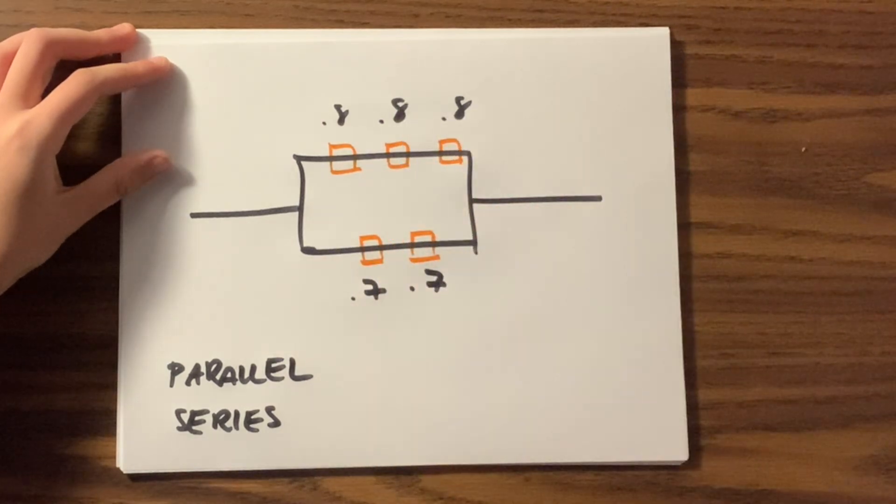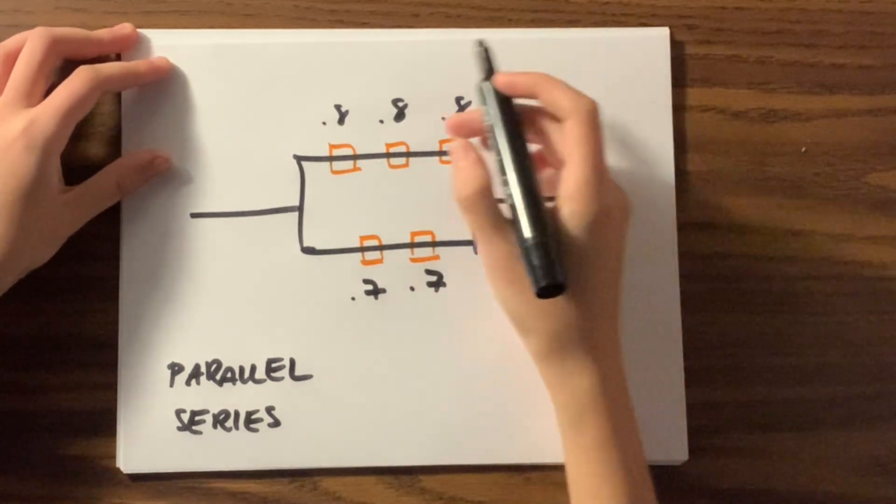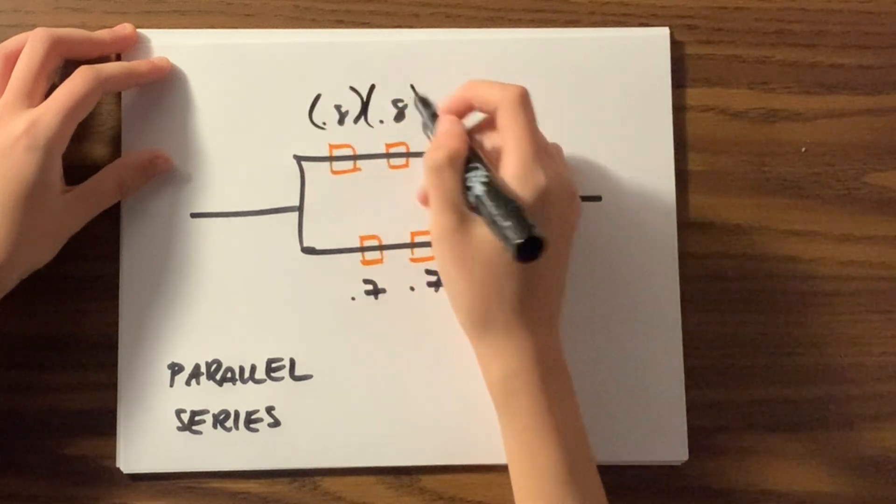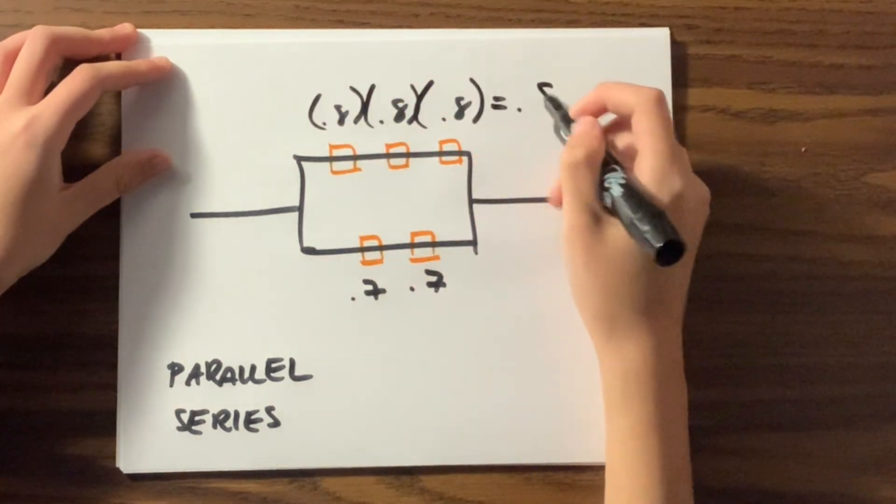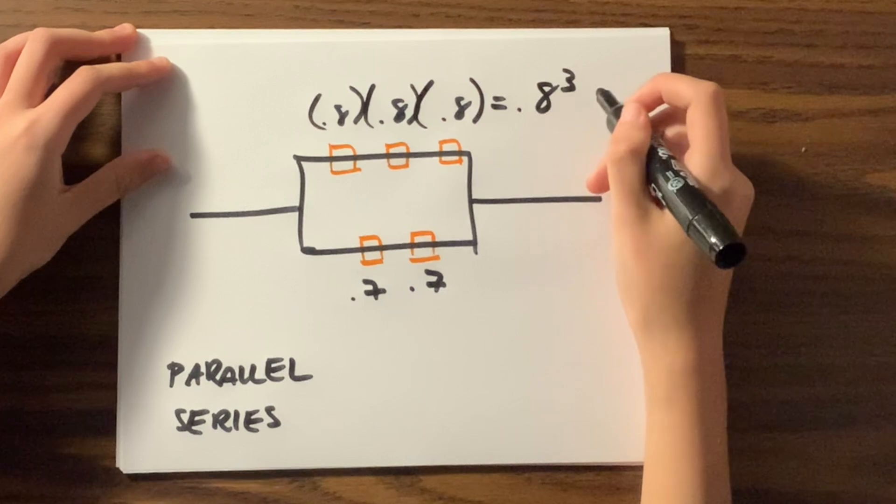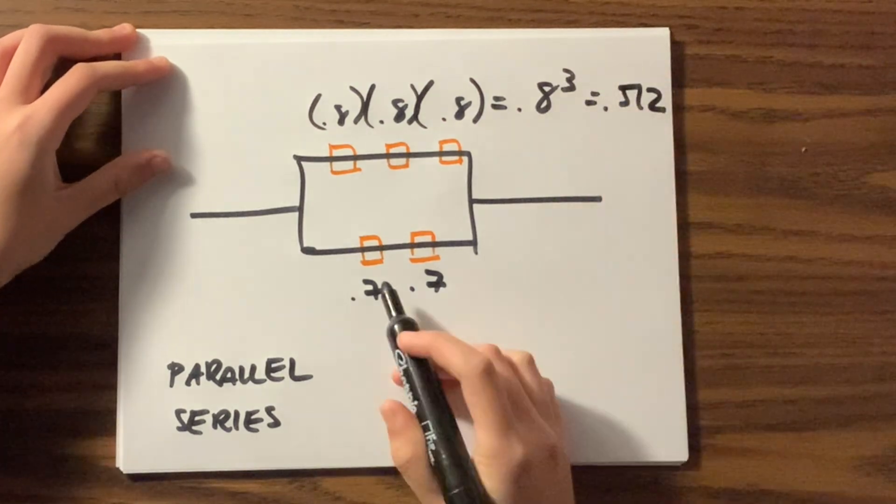The probability of this will be each of these multiplied by each other, which is equal to 0.8 cubed, which equals 0.512.